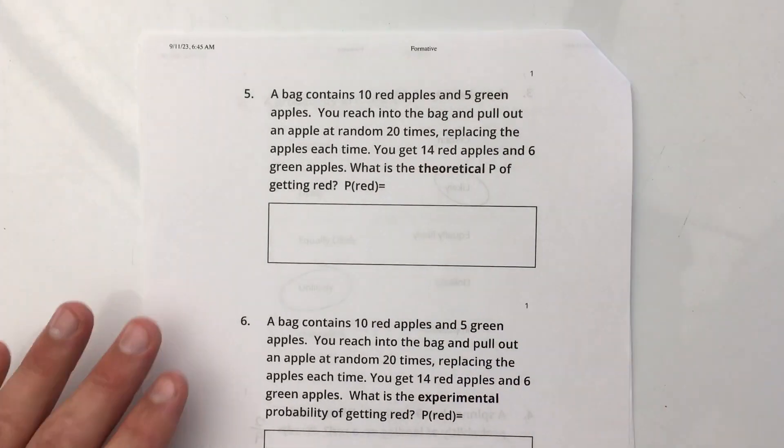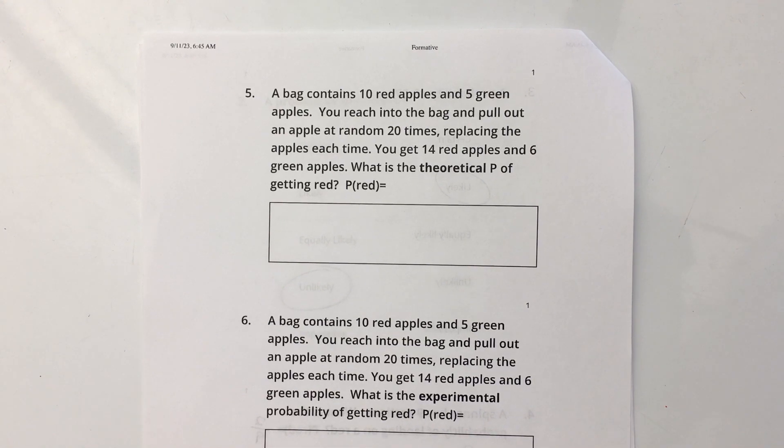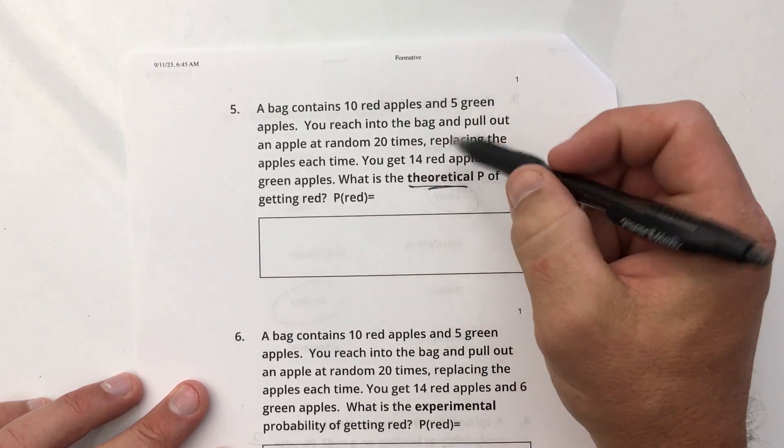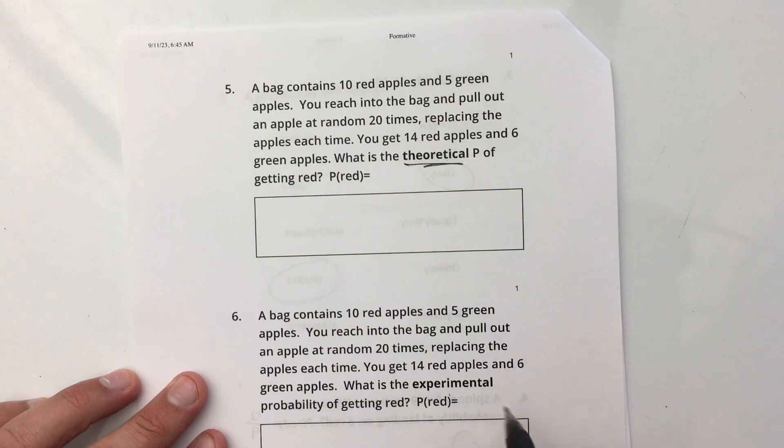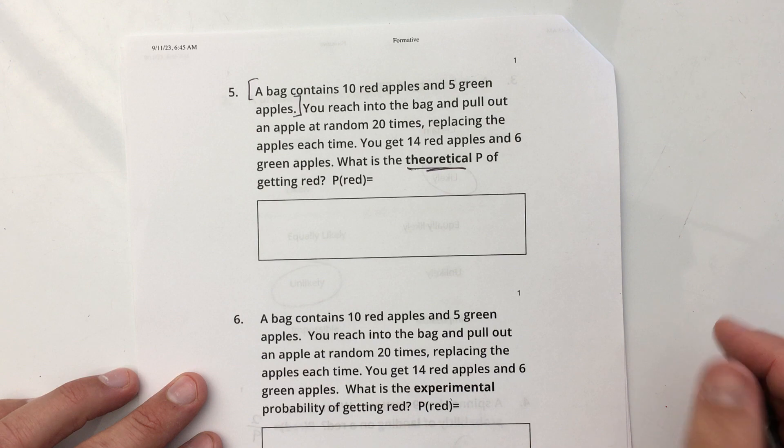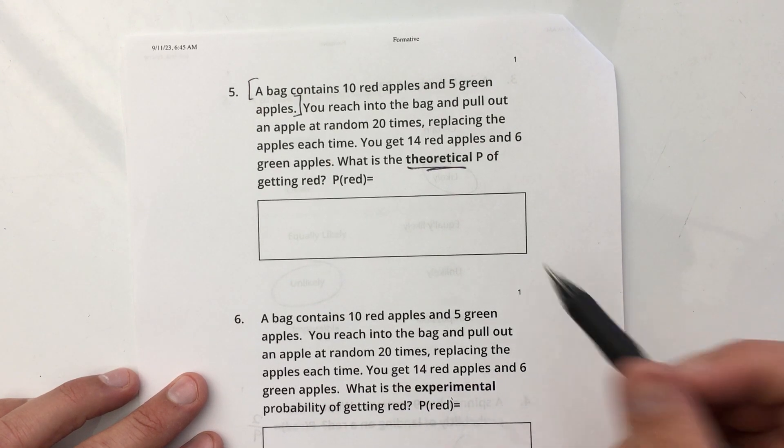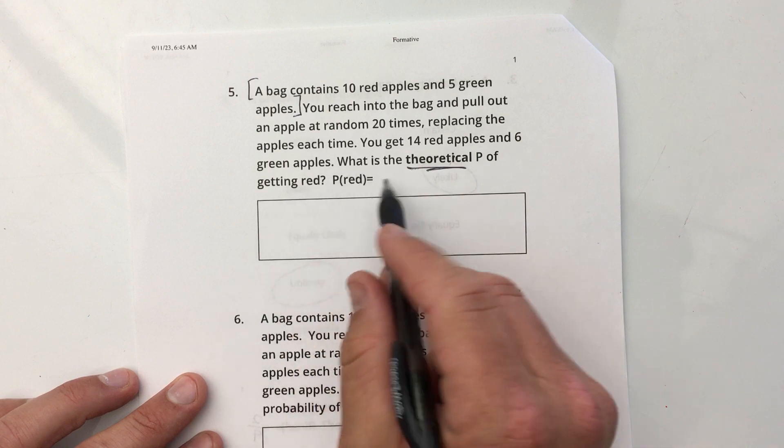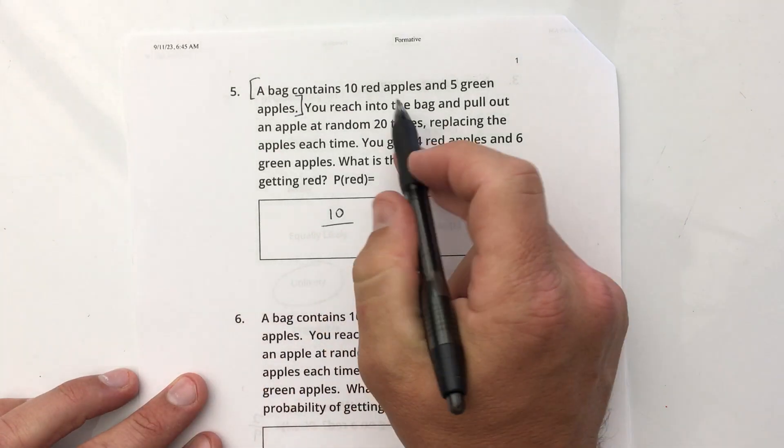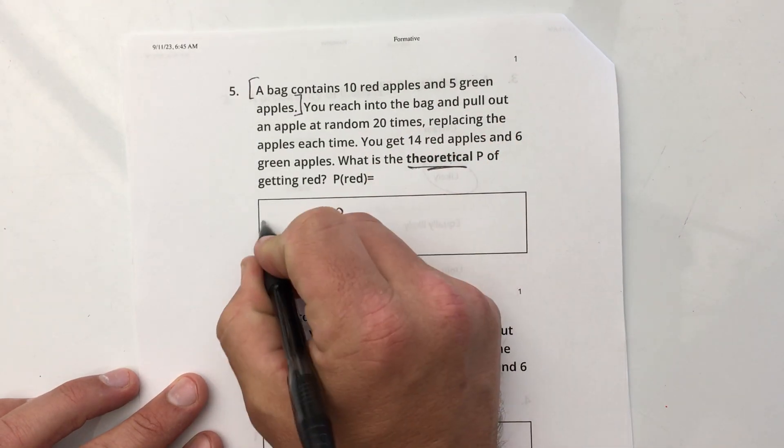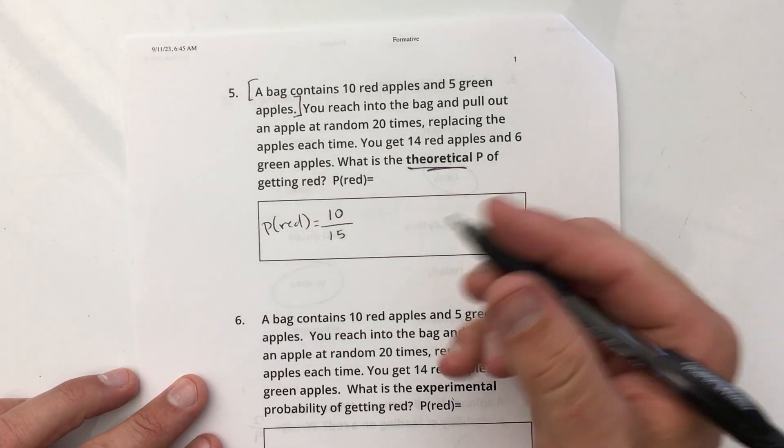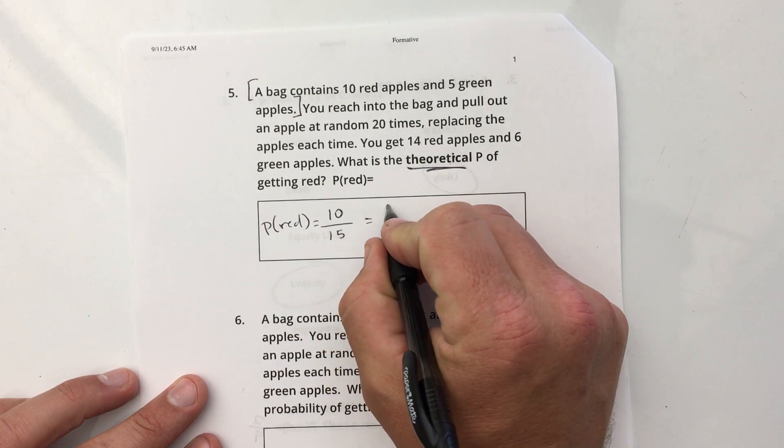A bag contains 10 red apples and 5 green apples. A little hint here. It's asking about theoretical. All the information in this problem, you can answer both theoretical and experimental. But just this first sentence, this is the information you need for theoretical. It tells me about the contents of the bag. How many red apples, probability of red. There are 10 red out of the total number of outcomes. There are 15 total apples. So the probability of getting red is 10/15. You can leave it like that because it's probability. I'm okay if you don't simplify.